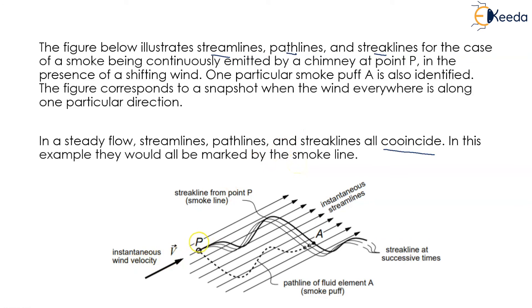Look, this is my point p, and from point p the smoke puff is being released. This will be my streakline, which is flowing in one direction. Another one will be the pathline of fluid element A. This dotted line shows the pathline, and this is the instantaneous wind velocity. The streakline at successive times has been represented in this given figure.